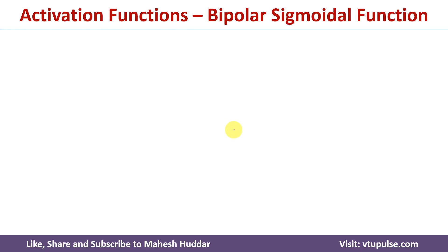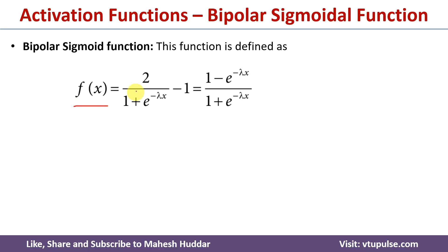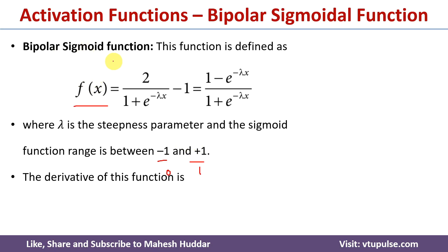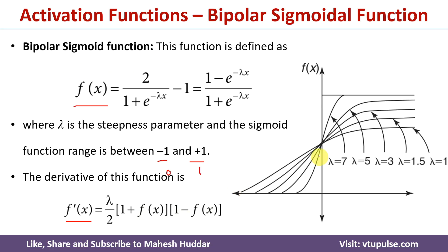The second sigmoid activation function is the bipolar sigmoid activation function, defined as f(x) = 2 divided by (1 plus e raised to minus lambda x) minus 1, which equals (1 minus e raised to minus lambda x) divided by (1 plus e raised to minus lambda x). The output of the bipolar sigmoid activation function will be in the range of minus 1 to plus 1. Its derivative is f'(x) = (lambda divided by 2) times (1 plus f(x)) times (1 minus f(x)). If the steepness parameter is equal to 1, the curve starts from minus 1 and goes to plus 1. For different steepness parameters, we will get different curves.